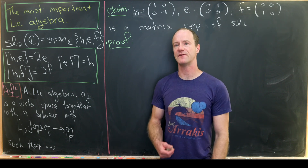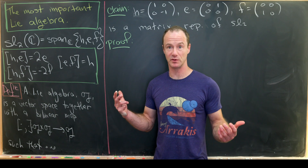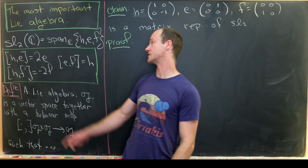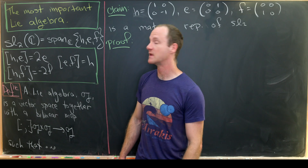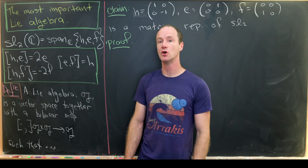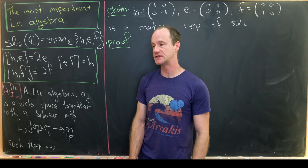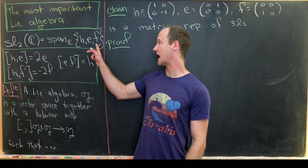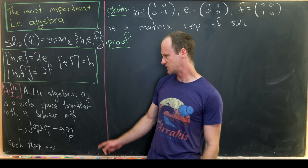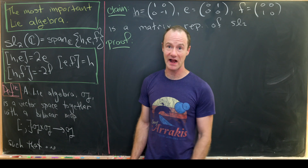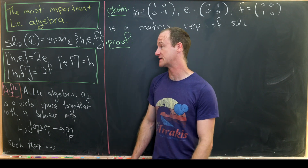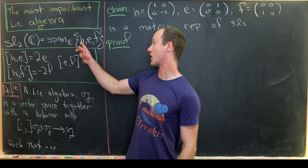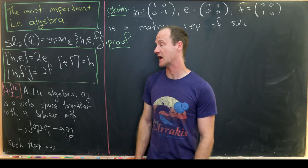Now that we've recalled that definition, let's look at this algebra which I am saying is one of the most important Lie algebras. It's called SL2 and it's three-dimensional. We generally take the names of its basis vectors to be h, e, and f. Since we need this bracket to be defined on all of SL2, it's enough to look at the bracket on h, e, and f.